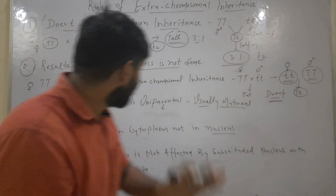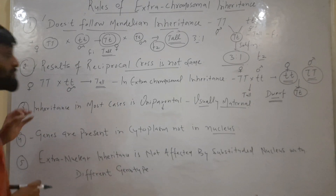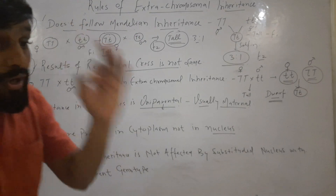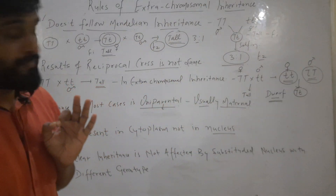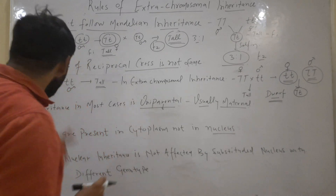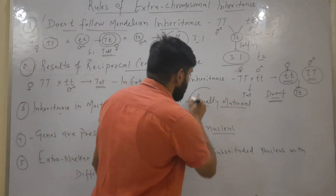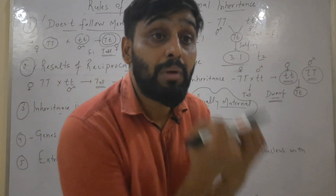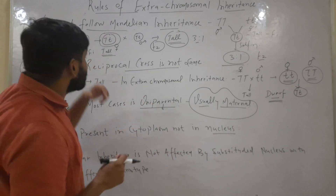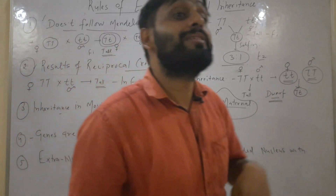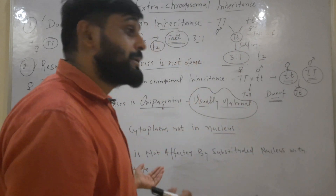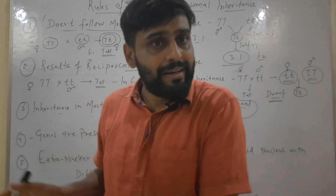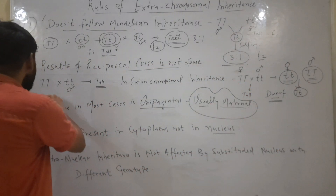The third rule is that inheritance in most cases is uniparental, meaning only one parent is involved, and usually it is maternal — genes always come from the mother. In Mendelian inheritance, it is always biparental: half the chromosomes are inherited from the mother and half from the father. But in extra-chromosomal inheritance, it is uniparental.